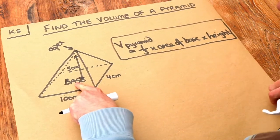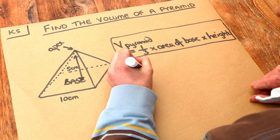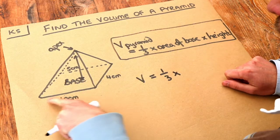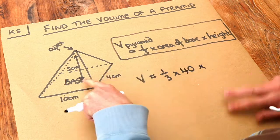So what is the area of the base? Well it's just a rectangle, isn't it? So the area of the base is 10 times 4. So the volume in this case is going to be one third times the area of the base, the area of the rectangle which is 10 times 4 which is 40, multiplied by the height.